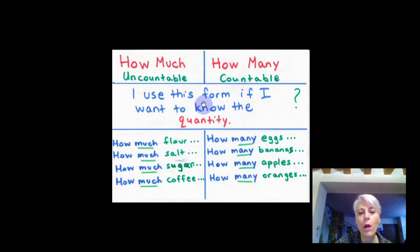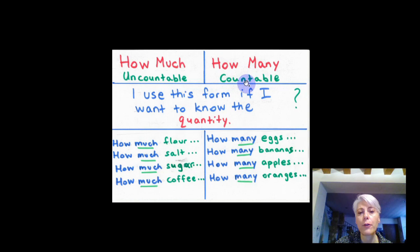Now, if I want to ask about the quantity of objects or food I have, I use 'how much' for uncountable and 'how many' for countable. 'How much' corresponds to 'quanto' or 'quanta', and 'how many' corresponds to 'quanti' or 'quante'.